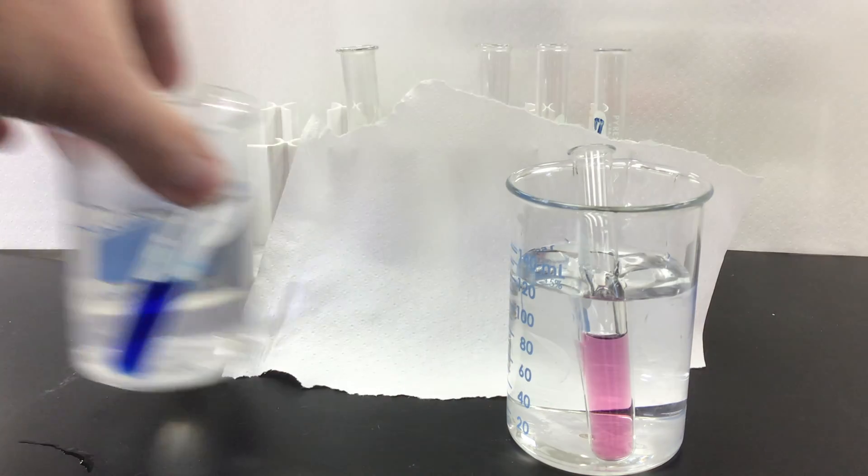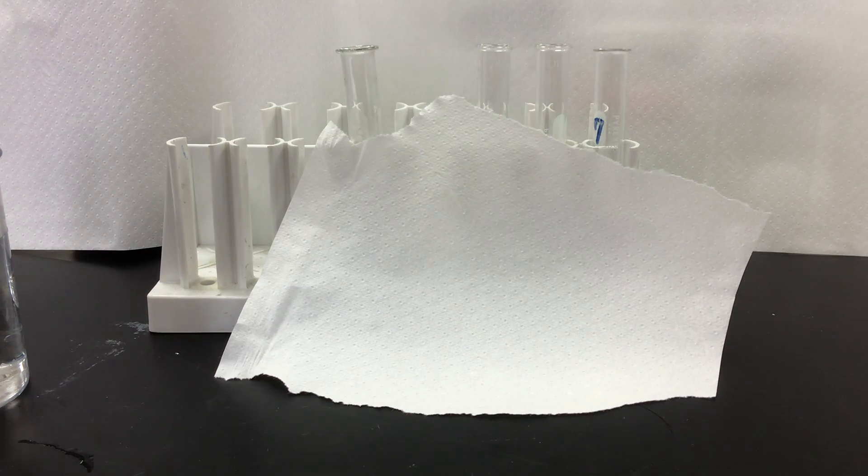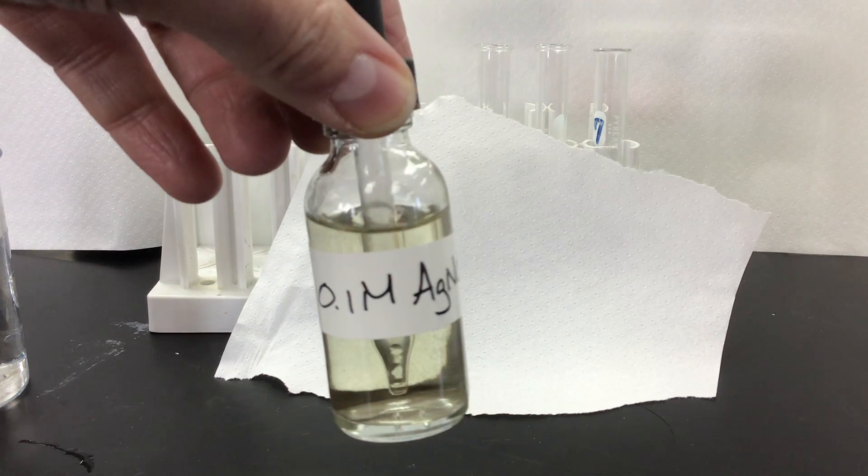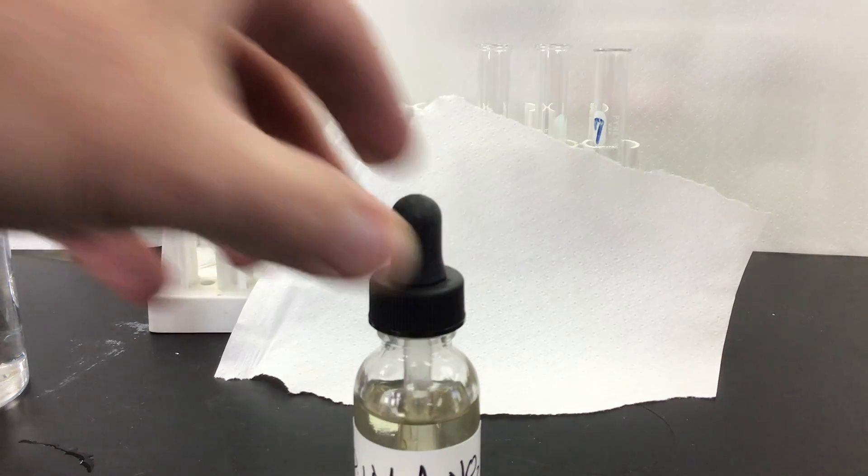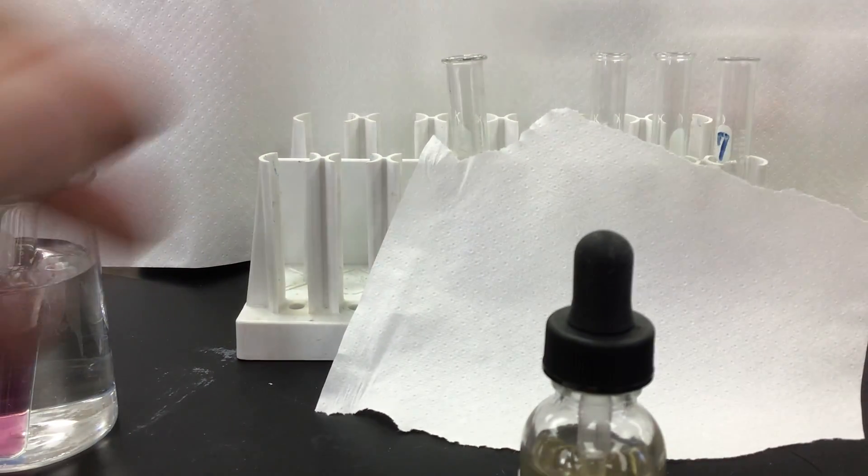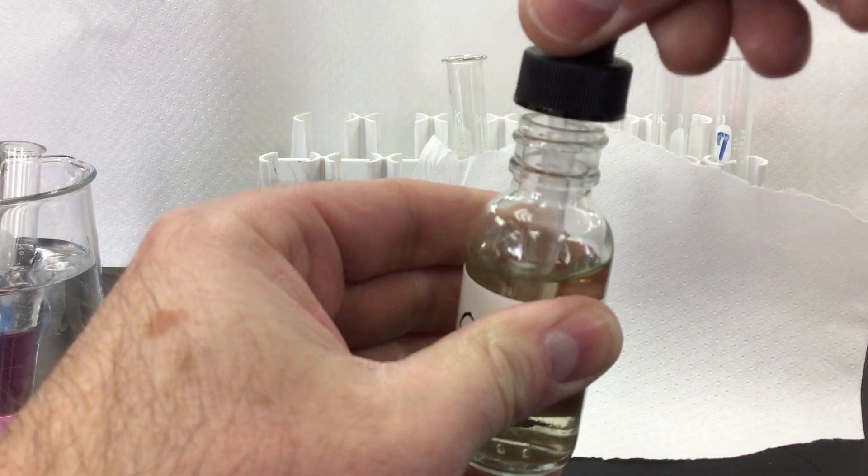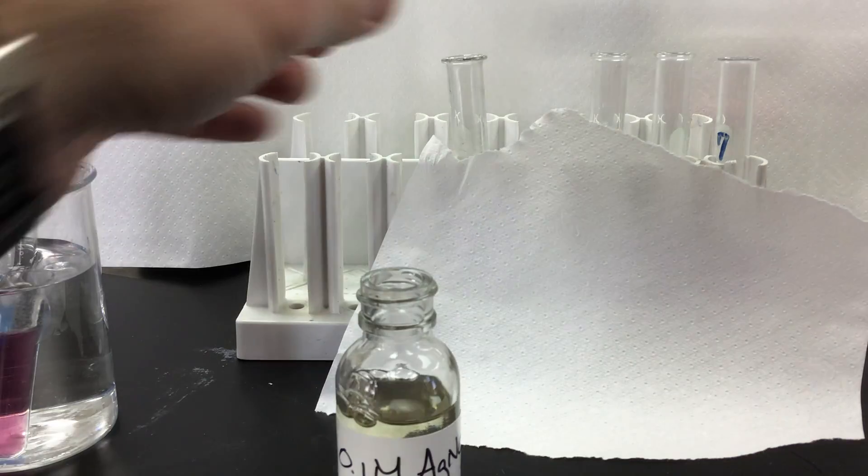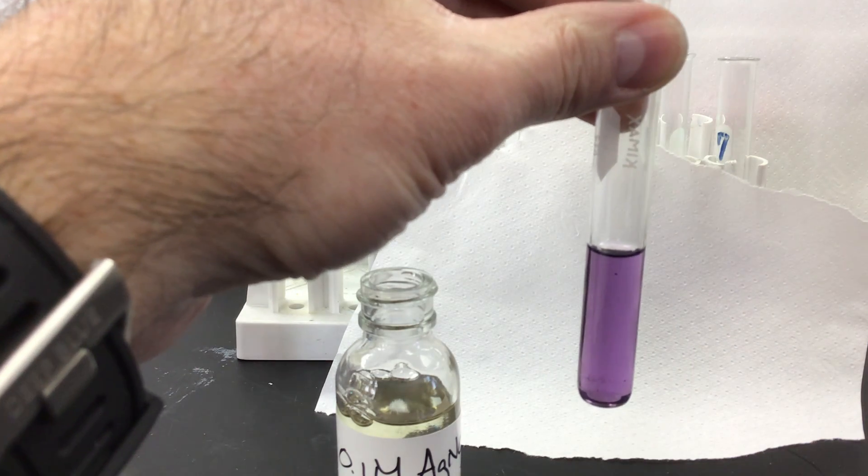Next thing we're going to do is we're going to take a look at what happens when we add some silver nitrate solution. I've got a silver nitrate solution here and we're going to add that to one of our test tubes and see how it reacts. Our method says we're going to add about five drops.